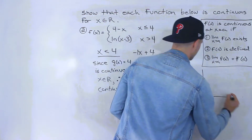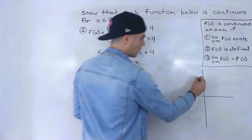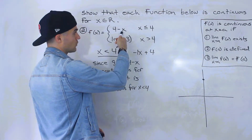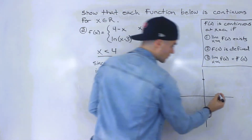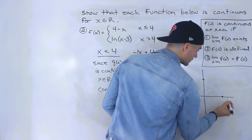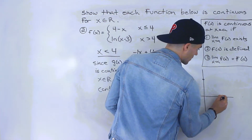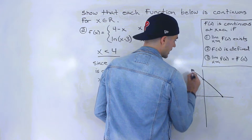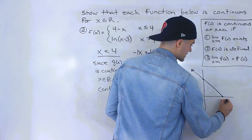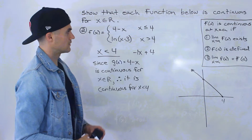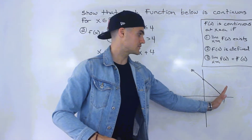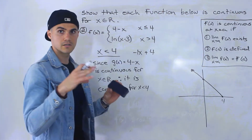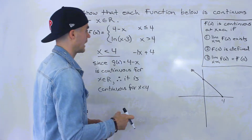Let's make a sketch. There's a y-intercept at 4. If we plug in x equals 4, we get 4 minus 4, which is 0, so there's an x-intercept at 4 as well. The line is defined for all x values less than or equal to 4, so we put a closed dot there. We'll discuss that x value in more detail at the end.